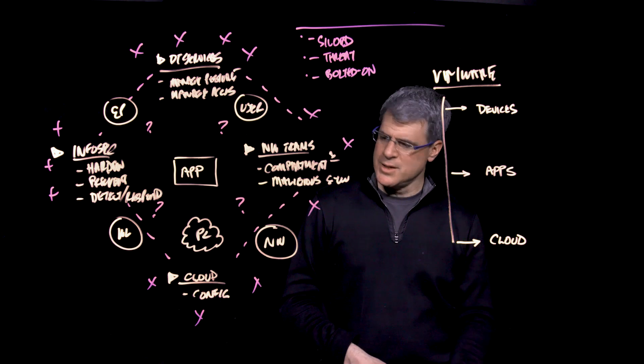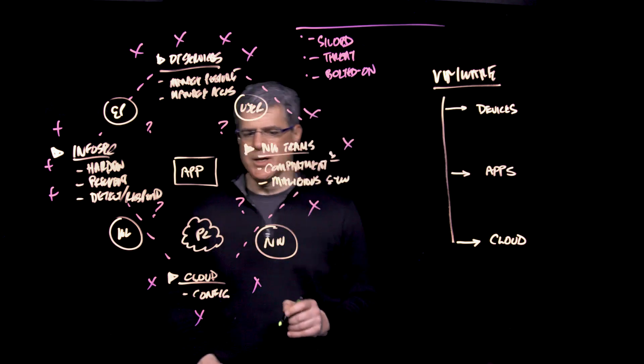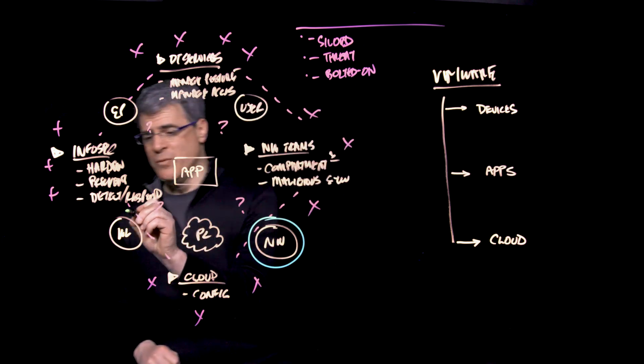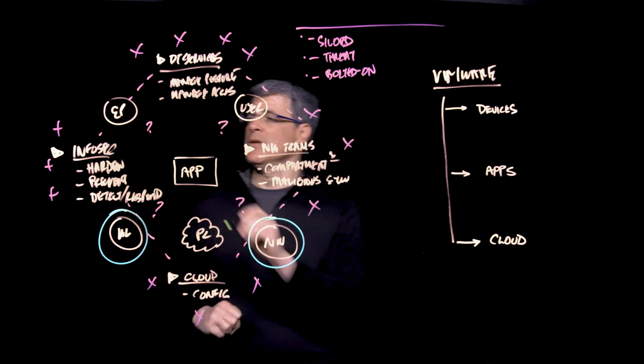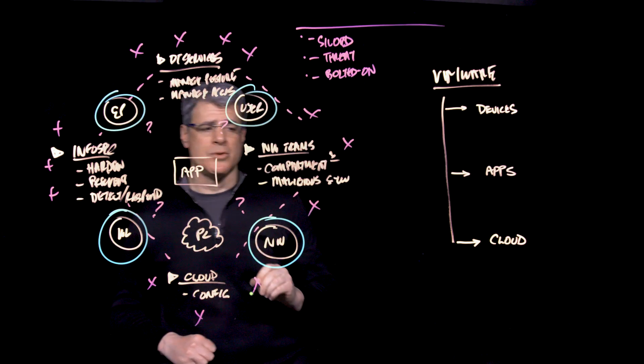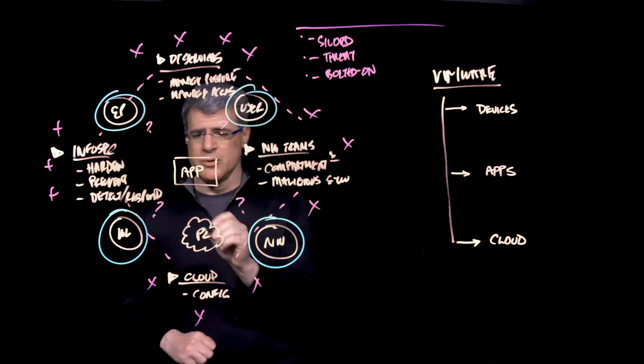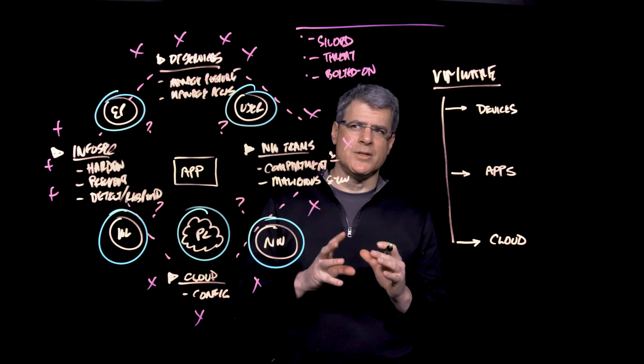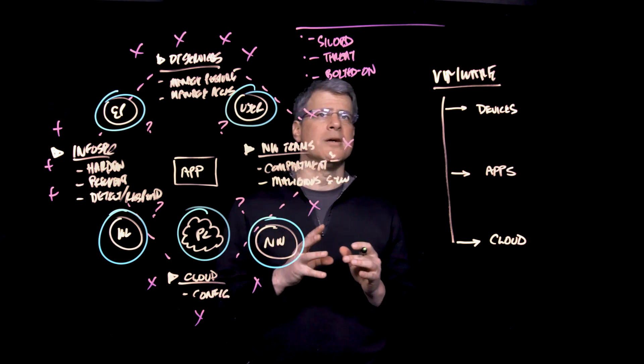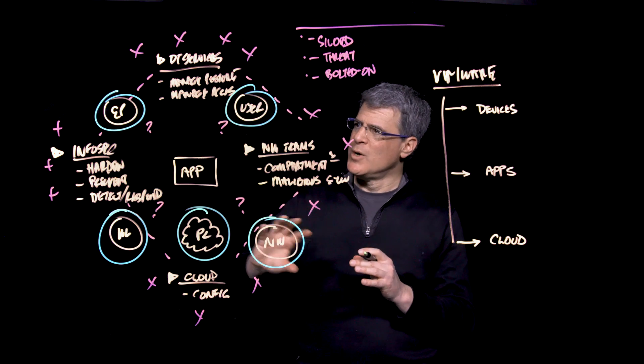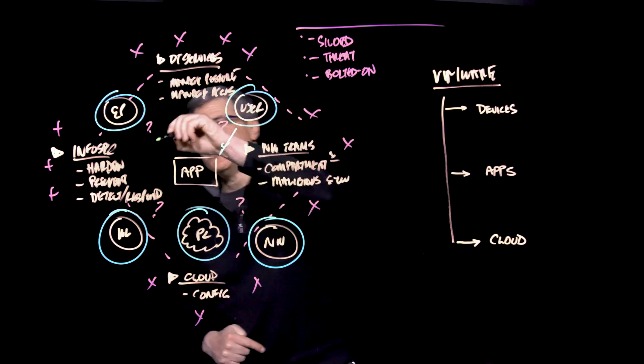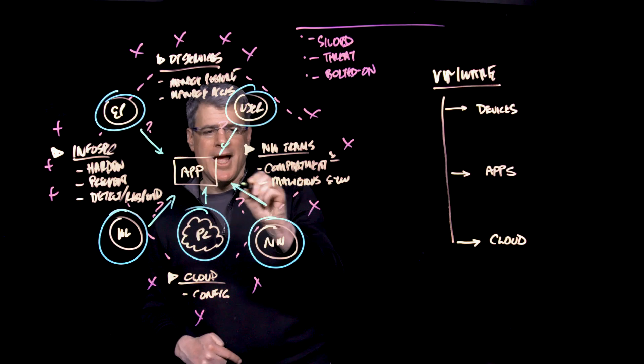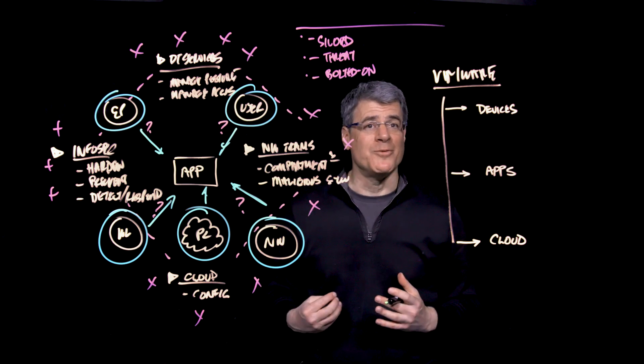What that's really given us is some very interesting control points. Things like NSX and the network switch with vSphere and the workloads with Workspace ONE managing users and devices and solutions like SecureState managing the configuration of these clouds. What that's given us is some very unique control points with which to understand the application that we're really ultimately trying to protect.